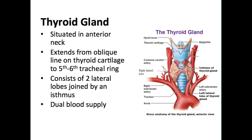It usually consists of two lateral lobes connected by an isthmus in the midline. However, occasionally there can be another lobe, known as the pyramidal lobe, that extends from the superior part of the isthmus, across the thyroid cartilage, attaching to the hyoid bone.